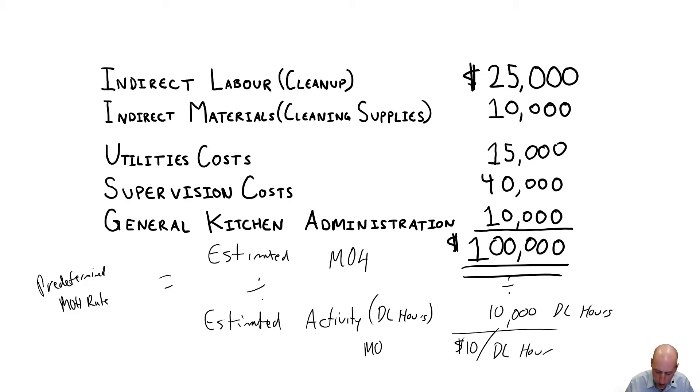And that's an MOH rate. So whenever my employees work an hour, we apply $10 worth of overhead costs to that job or to that batch of cupcakes or whatever it is we're applying a cost to, just as an estimate or a stand-in for that overhead cost until the actual costs come in, until the actual costs are known.